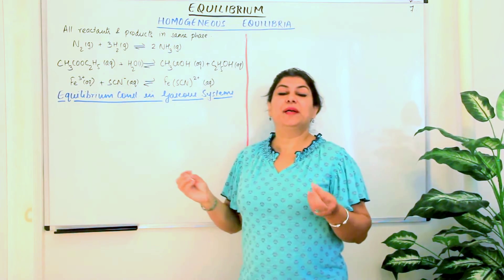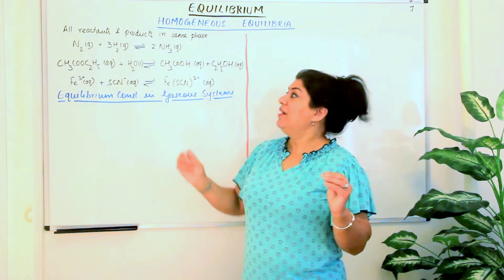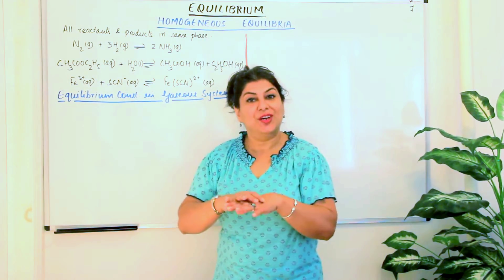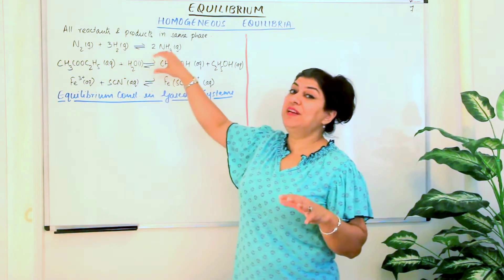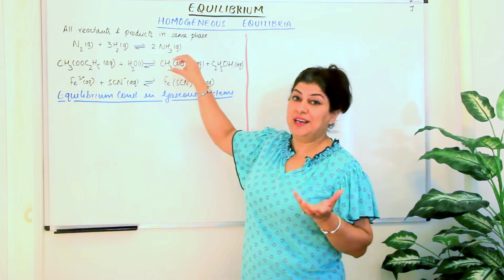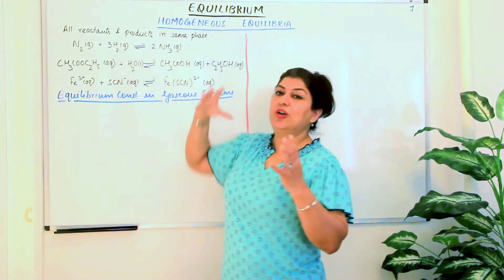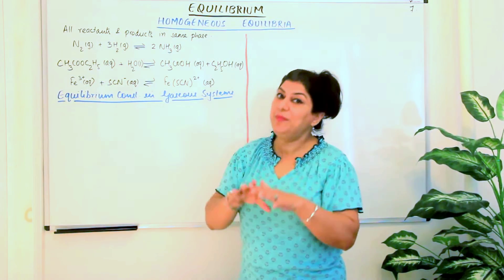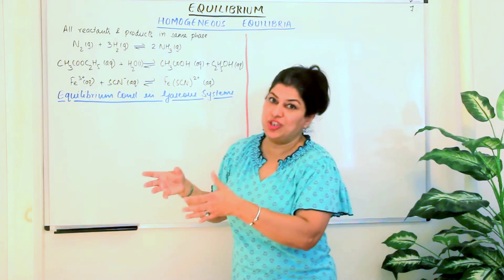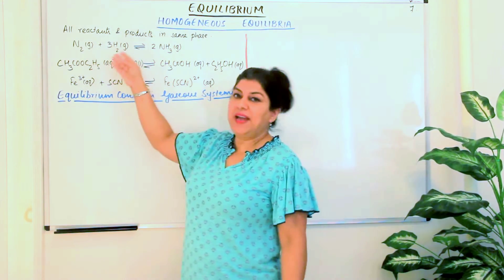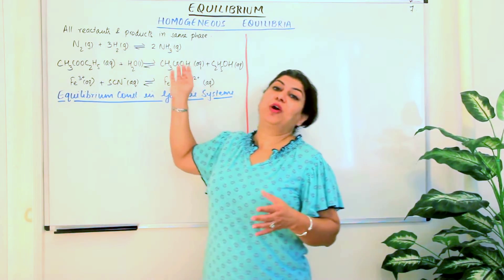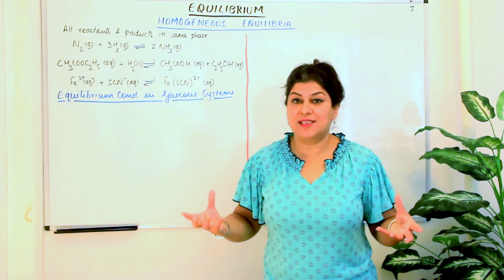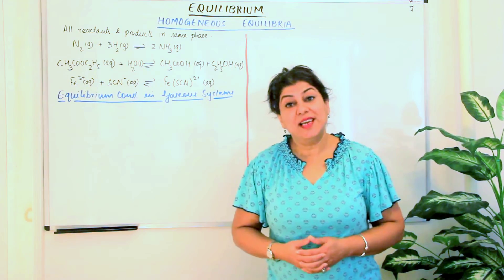A homogeneous equilibrium would be one where all the reactants and the products make a homogeneous mixture — we call it an equilibrium mixture. So a homogeneous equilibrium is one where the equilibrium mixture is actually homogeneous, which means all the reactants and the products are in the same phase, in the same physical state, giving us a homogeneous equilibrium.